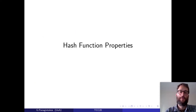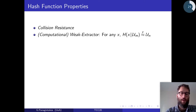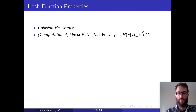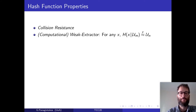I'll now present the three hash function properties we assume. The first one is collision resistance, a standard property about hash functions. The second one is that we assume that the hash function is a computational weak randomness extractor. More specifically, we need that for any adversarially generated x, it should be hard for the adversary to distinguish between hashing x with a uniformly random string from a uniformly random string that has the same size as the hash output. This is also a standard assumption about hash functions.